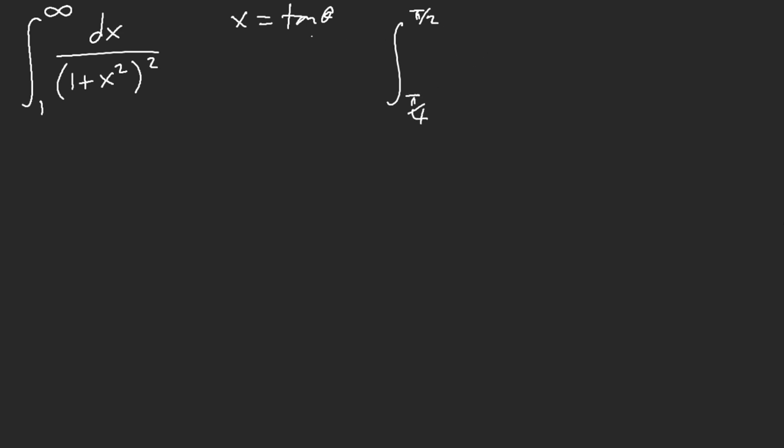That secant square is going to cancel out, but then we still have this 1 plus tangent square theta. So, of course, we're going to end up with cosine square theta.